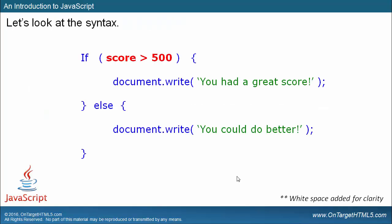Here we have an example of the structure of an if statement inside JavaScript. I've set the condition — in this case, score is greater than 50. If that's true, a certain block of code executes. If it's not true, a different group of code executes. I've added white space for clarity so you can see how it's structured. This is a typical structure of a conditional statement inside JavaScript, and actually inside many programming languages.